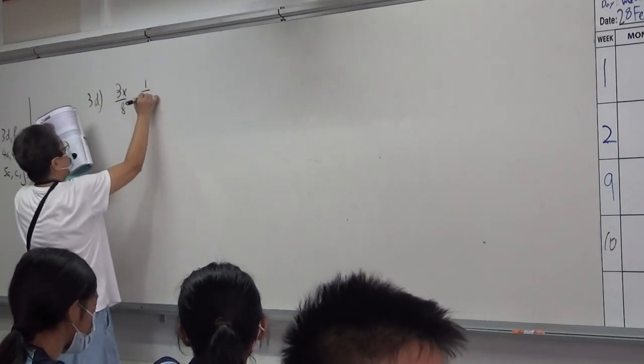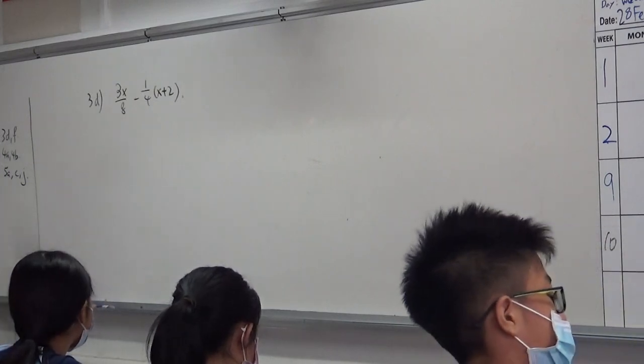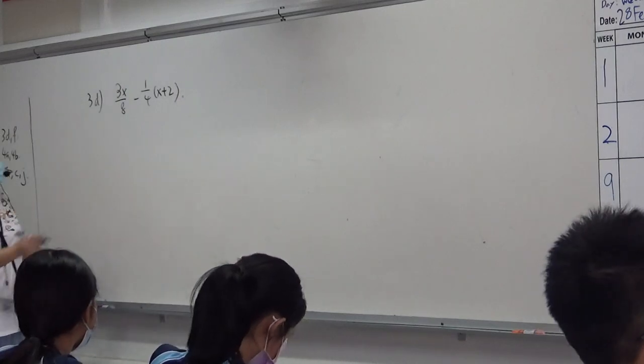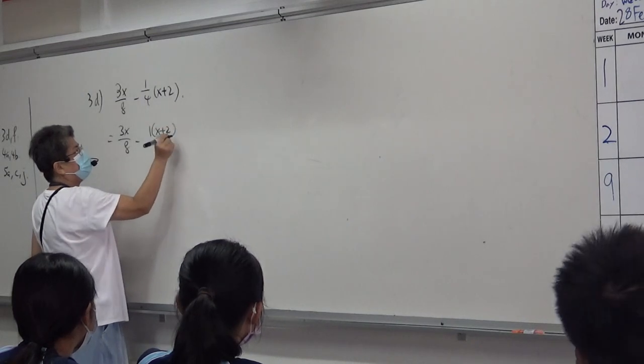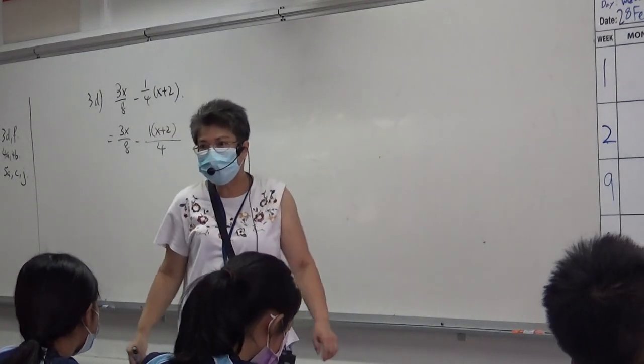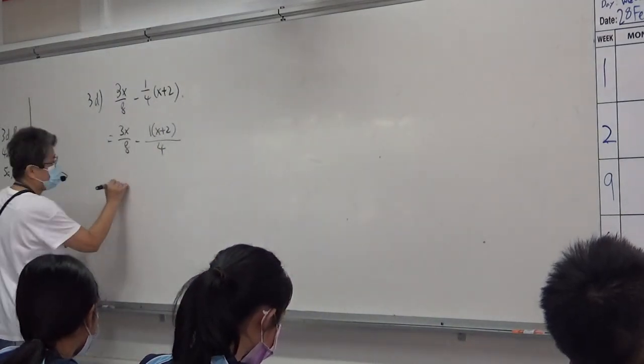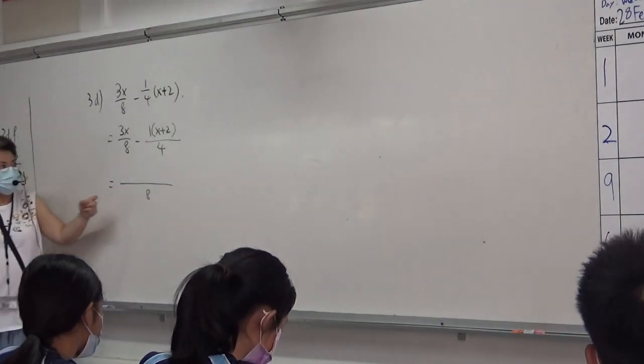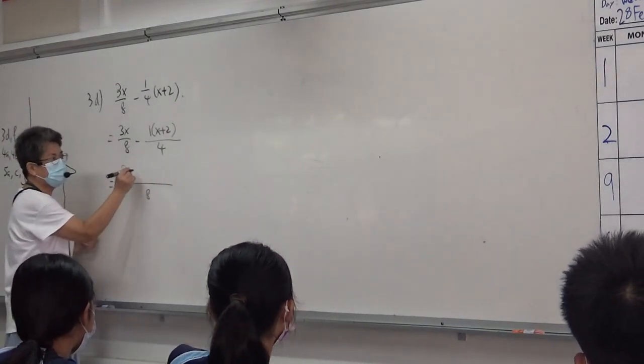3X over 8 minus 1.4X. Now, I told you 10 times in class, whatever is in the middle belongs to the top. Correct? Yes or no? 4 and 8, I changed to 1. I changed to 8. LCM is 8. Yes. 8 divided by 8 is 1. 1 times 3X is 3X.